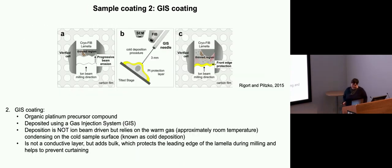Then the second type of coating is the gist coating. Gist is the gas injection system. This is an organic platinum compound that's deposited. You have the needle and your sample is here and it basically condenses on the sample due to this temperature differential. In the case of what we're doing, for more room temperature work, people can also use the ion beam to actually drive the deposition. But this layer, it's not particularly conductive because it's not a pure platinum, it's this organic compound, but it's very useful in adding a protective layer.